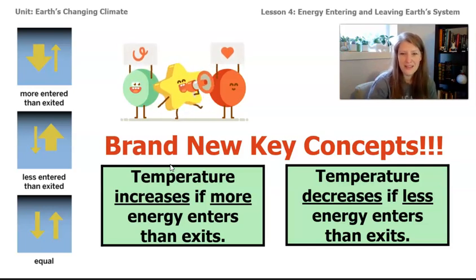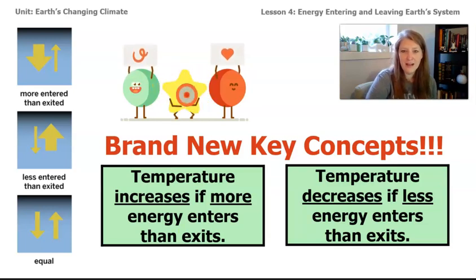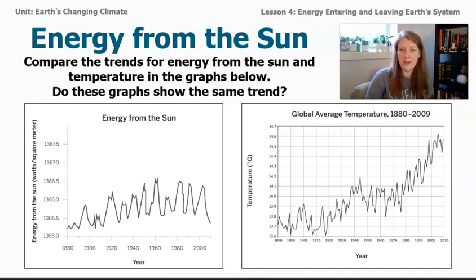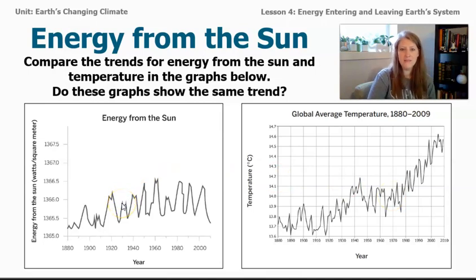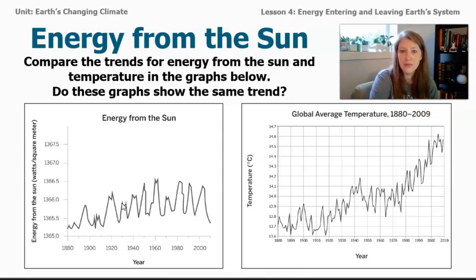In the sim, we noticed that increasing the amount of sunlight on our planet allows more energy to come into Earth's system. So is it possible that an increase in energy from the sun could be the cause of the most recent climate change? We do have data on the amount of energy coming from the sun over the same time period as our global average temperature records. Looking at that graph, there are a lot of fluctuations going up and down, just like the global average temperature graph — but it's not the same trend. We would expect both graphs to be going up if the trend were the same, and it's not. So we can rule out the idea that energy from the sun is causing the most recent climate change.